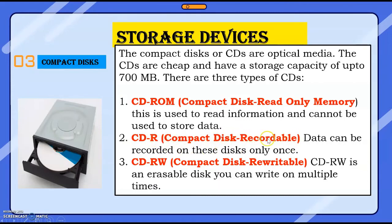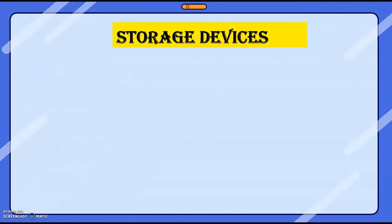With CD-ROM we can read only — we cannot write anything. Then CD-R means Compact Disk Recordable. Like a blank CD from the market — if it is a CD-R, that means it is recordable. Here we can record only once; we cannot rewrite it. One more type of CD is CD-RW, which means Compact Disk Rewritable. In this CD we can write and we can delete also. If you want to write it again, that also we can do — multiple times we can write. So: CD-ROM means read only; CD-R means we can write once; CD-RW means we can read and write many times. The CD storage capacity is 700 MB.